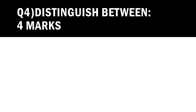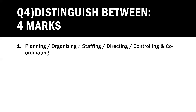As mentioned in the paper pattern, there are 4 distinguish between questions, out of which you attempt 3. Going through many years of papers, it's clear that from the management functions chapter — any two pairs from planning, organizing, staffing, directing, controlling, and coordinating — will appear in the exam. It can be planning versus organizing, planning versus staffing, or organizing versus directing. These 6 distinguishes given in your textbook before the summary chart must be prepared.